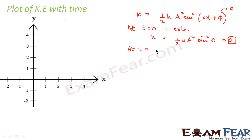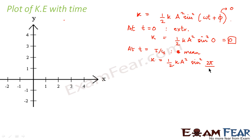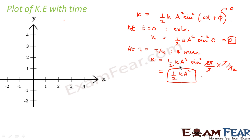Now let us calculate kinetic energy at t equals T/4, where the object is at mean position. Kinetic energy becomes half k a squared times sine squared(omega × T/4). Since omega equals 2π/T, substituting gives sine squared(π/2), which equals 1. So kinetic energy equals half k a squared, which is the maximum value of kinetic energy.